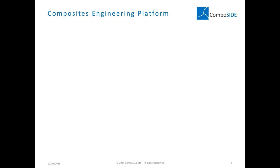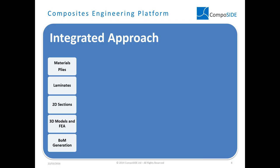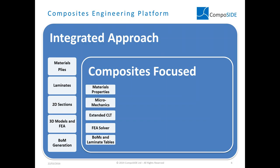Composite was developed by composite engineers and software developers to answer the need for a practical, efficient, composite-focused software covering the entire product development cycle. What we integrate is an approach that covers material plies, laminates, 2D design and analysis, 3D models and FEA, alongside bill of materials generation. The system is fully integrated so designers can create materials and plies and jump straight into 3D models, or replace materials and recreate bill of materials at the end.